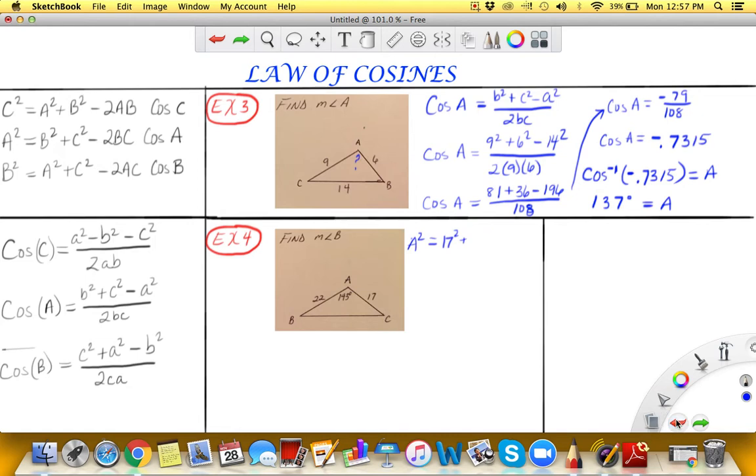Missing a little space there but we'll do that down here. So A squared is equal to 17 squared plus 22 squared minus 2 times 17 times 22 and then times the cosine of 143 degrees. Notice we're using angle A.